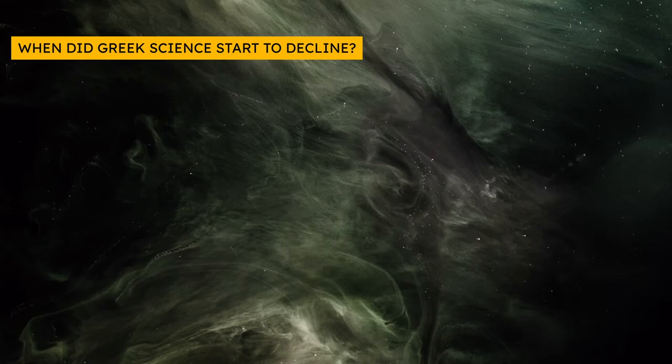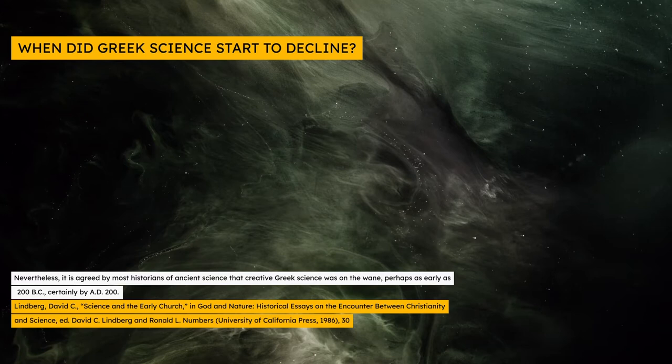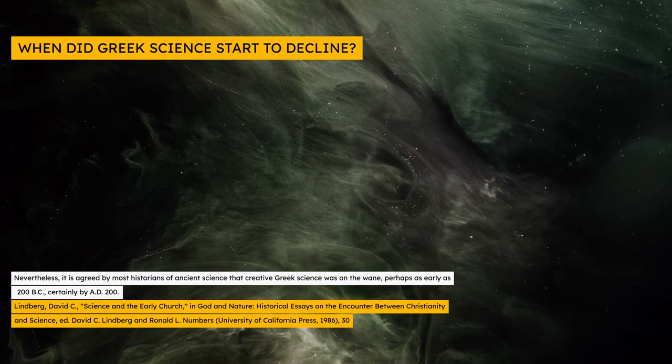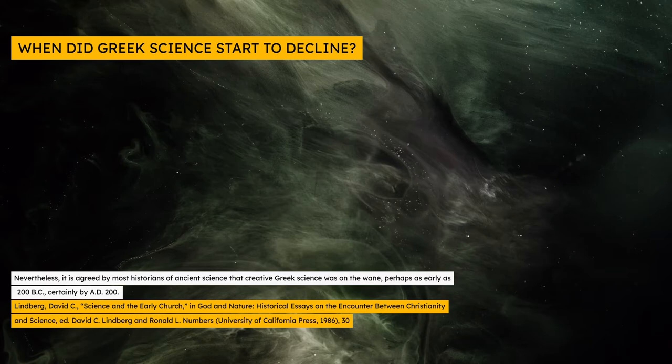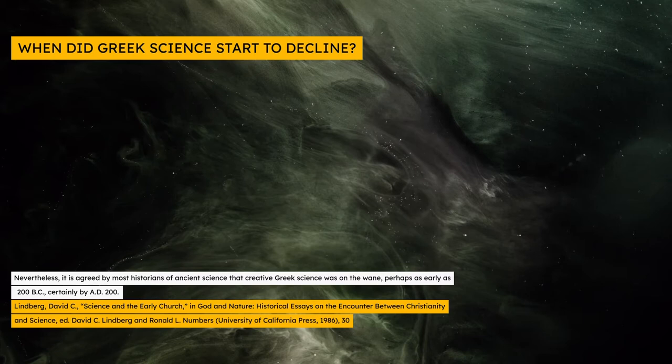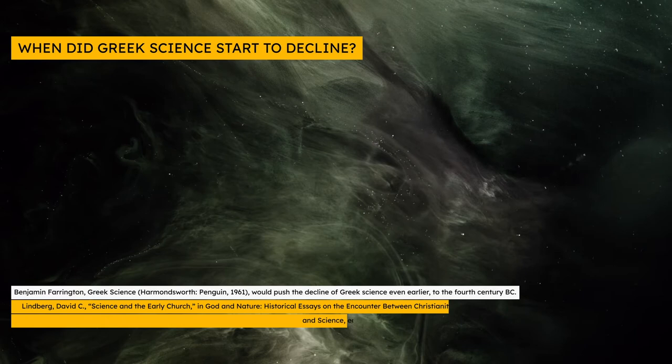So when did Greek science begin to decline? Although estimates vary, historians of science typically agree that the decline of Greek science started well before the Christian era. Writing in 1986, historian of science Professor David Lindberg said that it is agreed by most historians of ancient science that creative Greek science was on the wane, perhaps as early as 200 BC, certainly by AD 200.